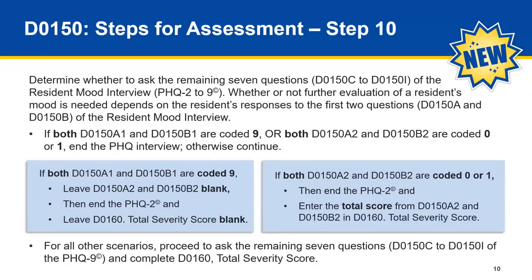Step 10 concludes with instruction on what to do for other coding scenarios. For all other coding scenarios, proceed to ask the remaining seven questions, D0150C through D0150I, of the PHQ 9 and complete D0160 total severity score. We will break down each component of this using scenarios in the following slides.